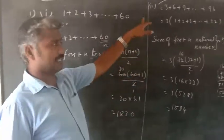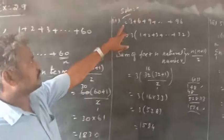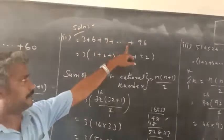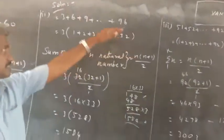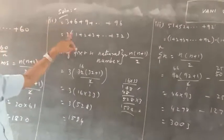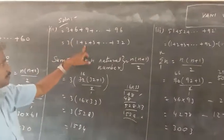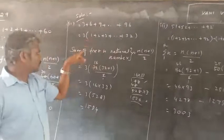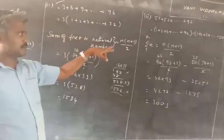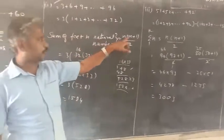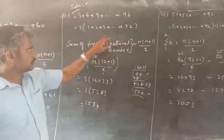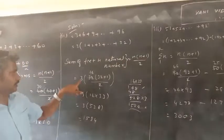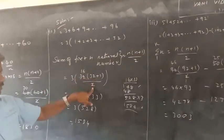Second sum: 3 plus 6 plus 9 plus etc. plus 96. Take 3 common, so 1 plus 2 plus 3 plus etc. up to 32. So now sum of first n natural numbers formula n into n plus 1 by 2. So n value is 32, so 3 into 32 into 32 plus 1, 1 by 2.